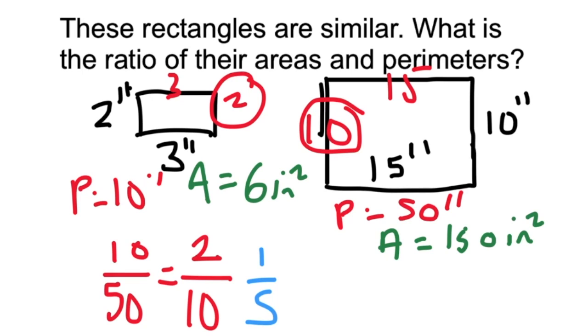So the ratio of the areas is 6 over 150, which if you simplify that is 1 over 25. Now think back to the last problem.